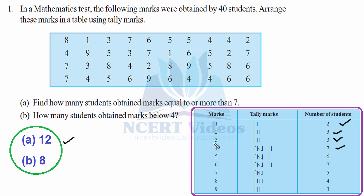For part B, how many students obtained marks below 4? Below 4 means we count for 1, 2, and 3 only — not 4. When you count it: 3, 2, and 1 give a total of 3 plus 3 is 6, plus 2 is 8. So 8 students scored below 4. This completes question number 1.